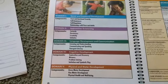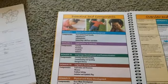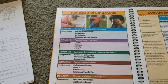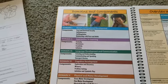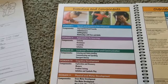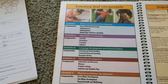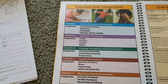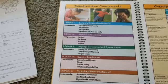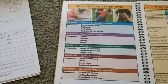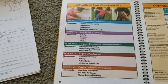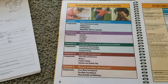The New Jersey birth-to-three has what they call domains and components. The domains are like social and emotional development, and the components are what you're looking for under those domains. They have approaches to learning, language development and communication, cognitive development, and physical and motor development.